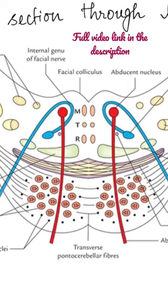During development, some of the pontine nuclei get displaced and they form the arcuate nucleus and the pontobulbar body.